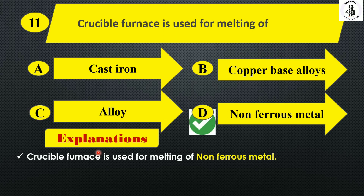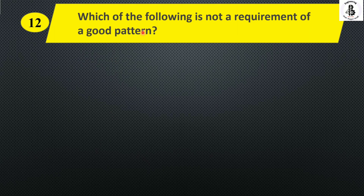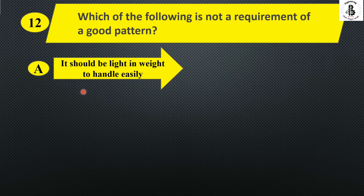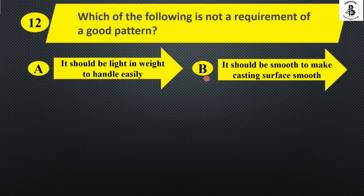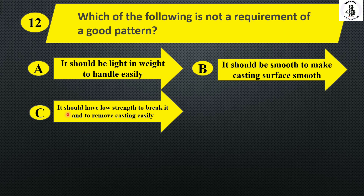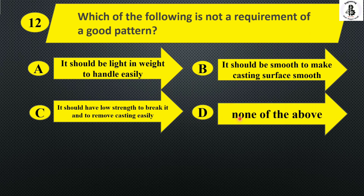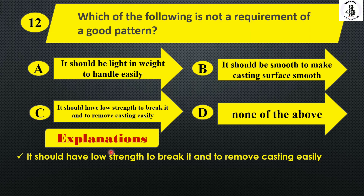Next: which of the following is not a requirement of a good pattern? Option A, it should be light in weight to handle easily. Option B, it should be smooth to make the casting surface smooth. Option C, it should have low strength to break it and remove the casting easily. And option D, none of the above. Basically, a pattern should not have low strength — that is not a requirement. So the right answer is option C.